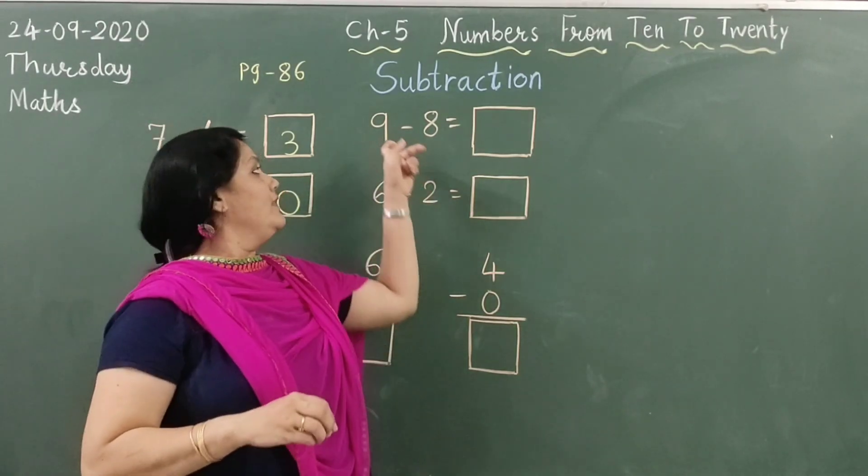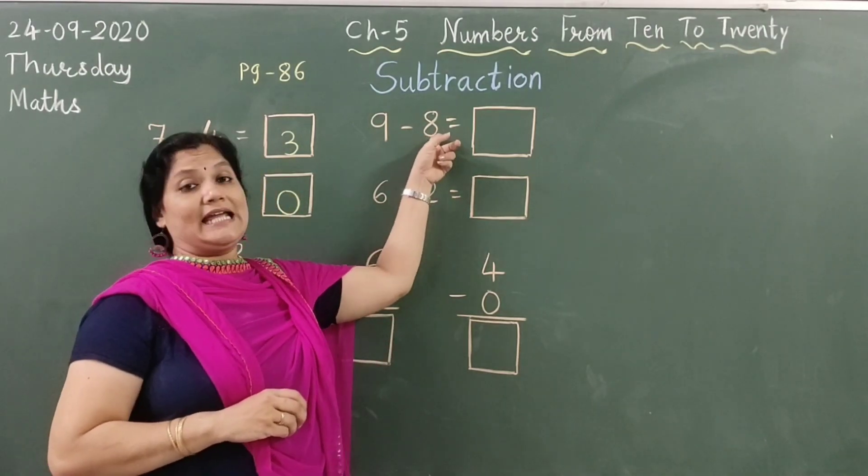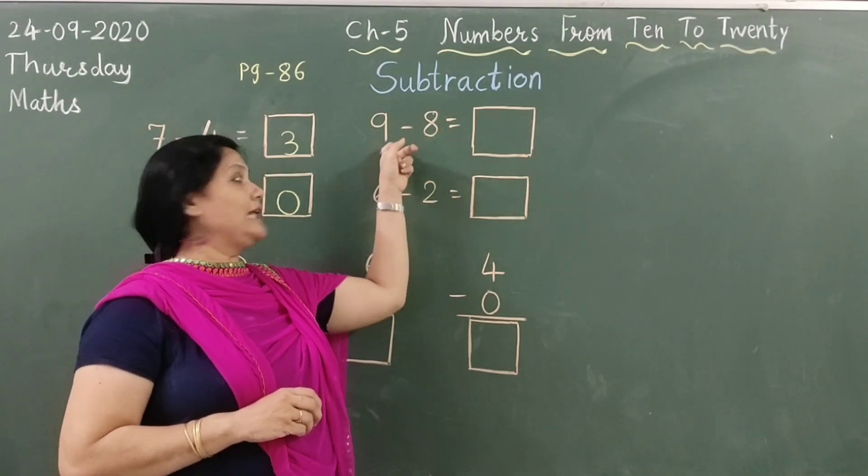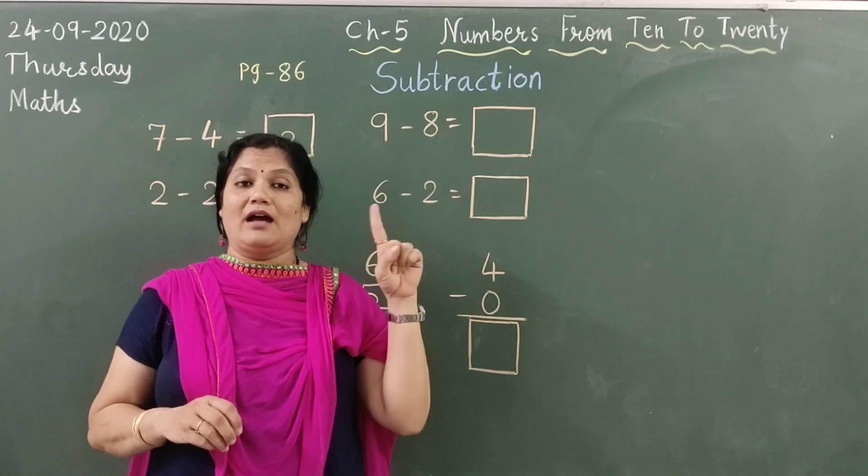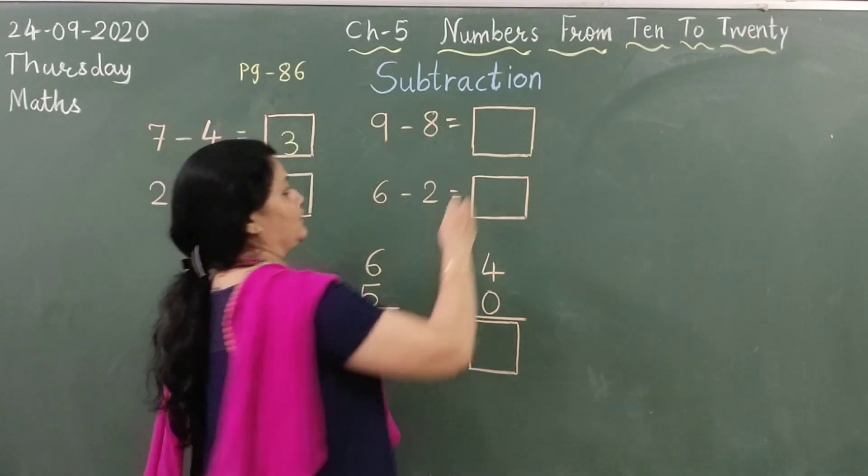Here, 9 minus 8. After 8 we have to count till 9. After 8 what will count? After 8 it is 9. So only one number, 1 will remain.